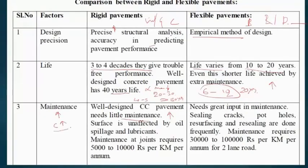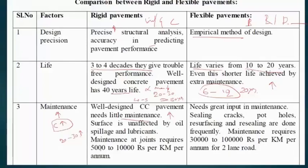Rigid pavement does not demand regular maintenance, but when it nears its design life — after 20 to 30 years — if the pavement fails, the maintenance cost is very high. Otherwise, general maintenance cost is very low, around 5,000 to 10,000 rupees per kilometer for a two-lane road. For flexible pavement, annual maintenance cost is 30,000 to 1 lakh rupees due to regular cracking and pothole formation.